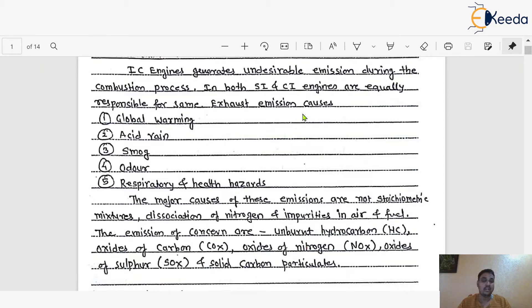And the main reason is incomplete combustion. The major causes of these emissions are non-stoichiometric mixture, dissociations of nitrogen and impurities in air and fuel. The emissions of conditions are unburnt hydrocarbon (HC), oxides of carbon (COX), oxides of nitrogen (NOX), oxides of sulfur (SOX), and solid carbon particulates.